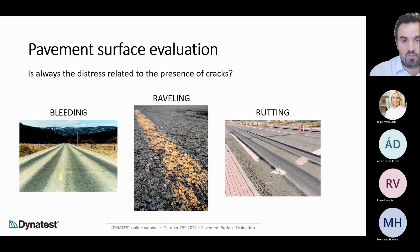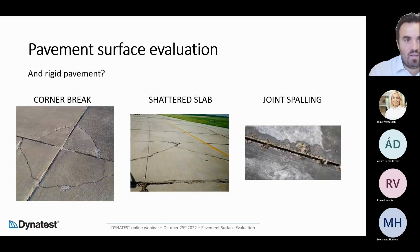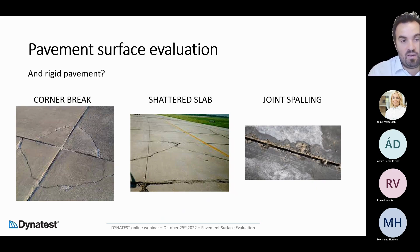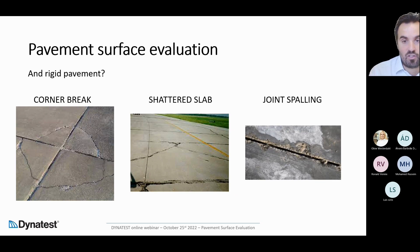For rigid pavement, we can have totally different types of distresses — some crack-related and some not. On the left we have corner break, probably the most critical part of the concrete slab because support is reduced compared to the center, making it very prone to breaking. We have shattered slab, where the slab is divided into big pieces broken into three, four or five parts. And we can have joint spalling — a degradation of joint quality. Each of these distresses has to be identified and characterized.